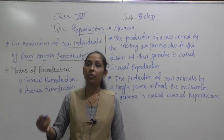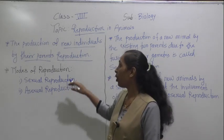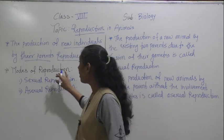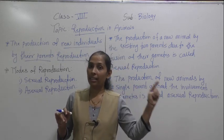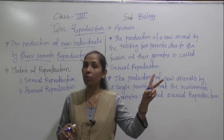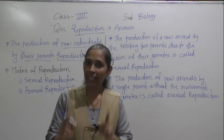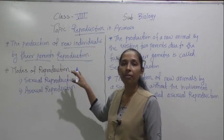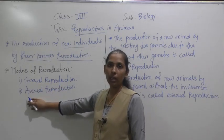The production means again and again production of a new individual which is the exact copy of their parents, and that process is called reproduction. Now we will discuss about the modes of reproduction. As we discussed in the last classes, reproduction in plants has two modes: asexual reproduction and sexual reproduction. Same like that, animals also have two different modes of reproduction — sexual reproduction and asexual reproduction.